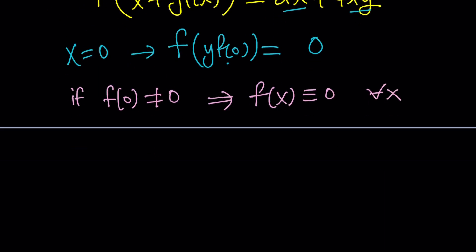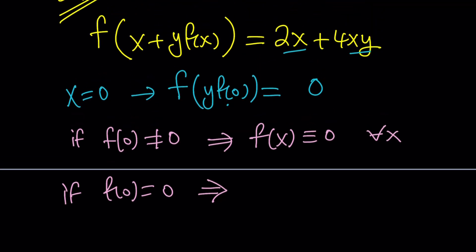But, if f(0) is equal to 0, then something interesting is going to happen. You know what that is? If f(0) is equal to 0, then we basically get, because we're going to replace x with 0, so we can now replace y with 0. Let's go ahead and do it.